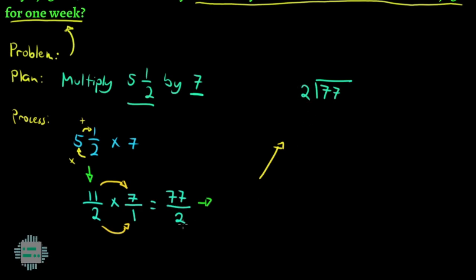Tandaan na yung 77 halves or 77 over 2 is the same as 77 divided by 2. Pwede natin i-rewrite itong improper fraction na to into a mixed number by simply undergoing the process of division. So, 77 divided by 2. Ilang 2 meron sa 77?